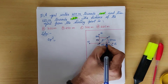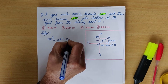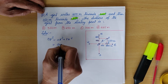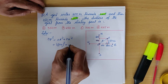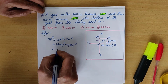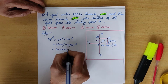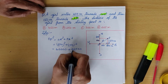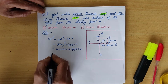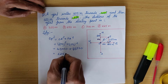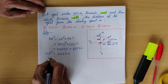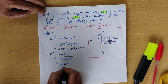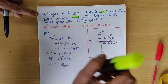OP² = OA² + PA² = 200² + 150². Adding these gives us the square root equal to 250 meters. The correct answer is option B.